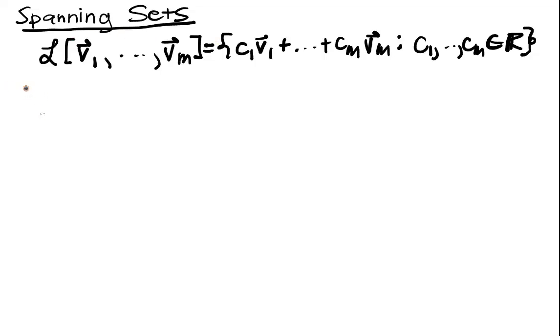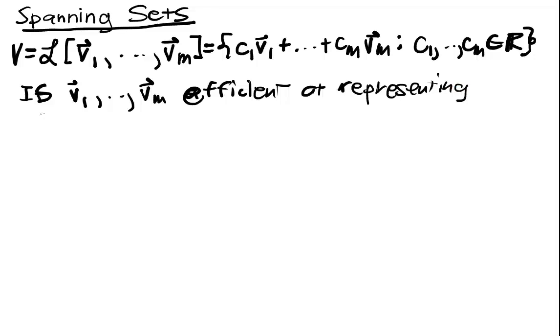And so linear independence last time, and let's set V is equal to this so I don't have to keep writing it every single time. So last time, we asked the question, or we really answered the question, is V1 up to Vm efficient at representing V?